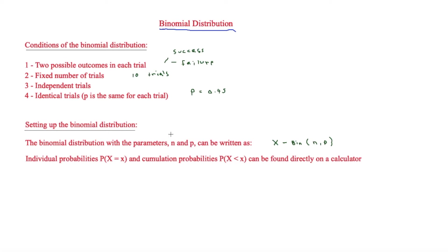n is the number of trials and p is the probability. This is written as X is binomially distributed with parameters n and p, denoted X~B(n, p). That is why it has to have identical trials, a fixed probability, and a fixed number of trials.